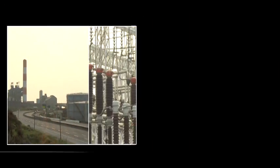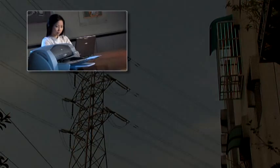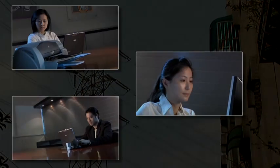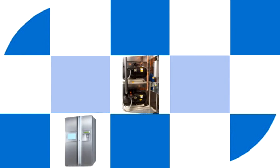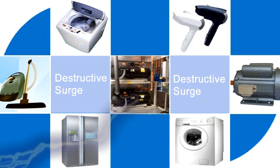There are many sources of voltage spikes other than lightning. Commercial districts with large motors, such as refrigeration units or pumps, will also cause surges. Even motors in the clothes washer or vacuum cleaner inside your home can generate destructive surges.